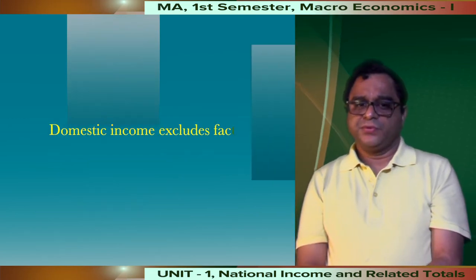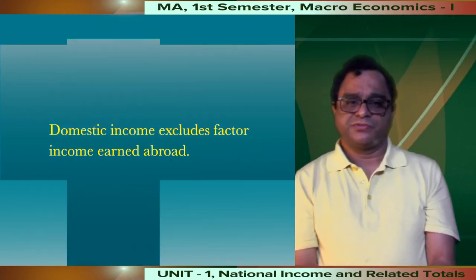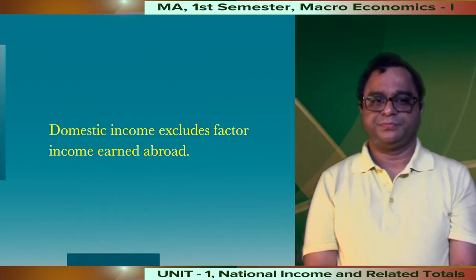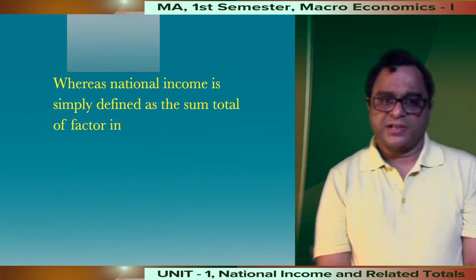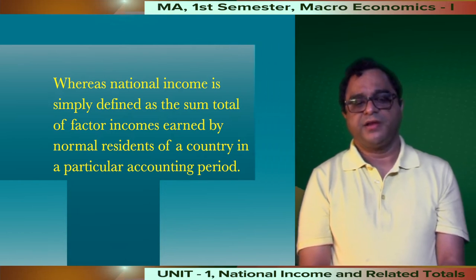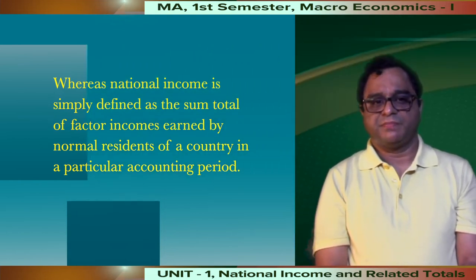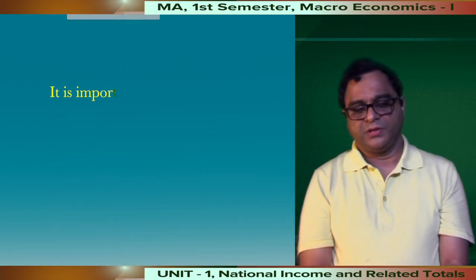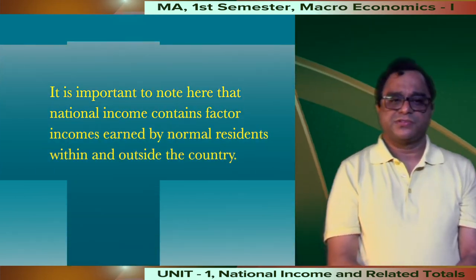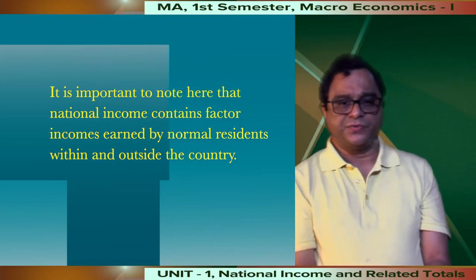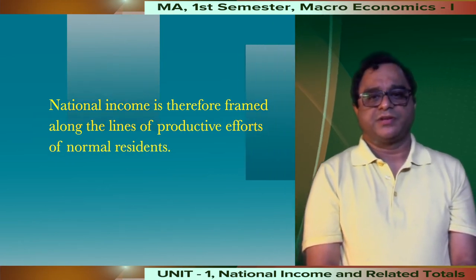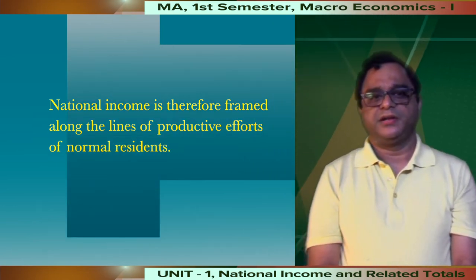We should clearly note that domestic income excludes factor income earned from abroad. Whereas, national income is simply defined as the sum total of factor incomes earned by normal residents of a country in a particular accounting period. It is important to note here that national income contains factor incomes earned by normal residents within and outside the country. National income is therefore framed along the lines of productive efforts of normal residents.